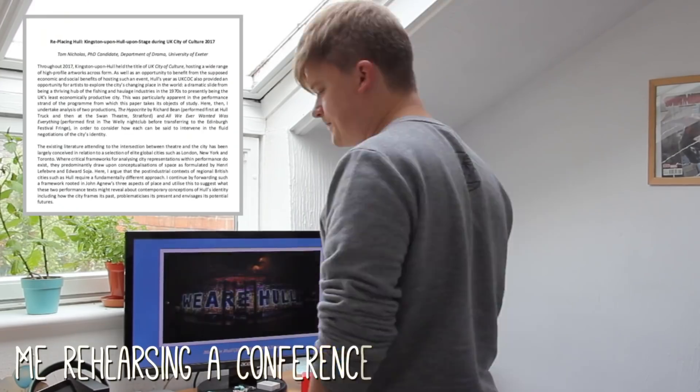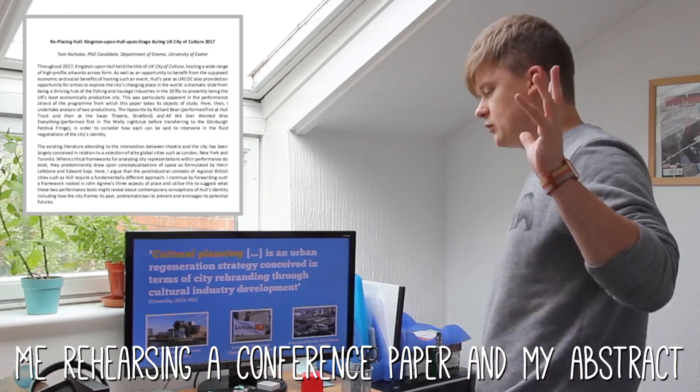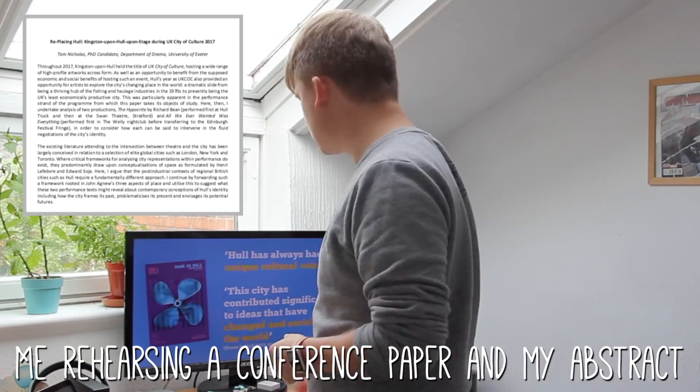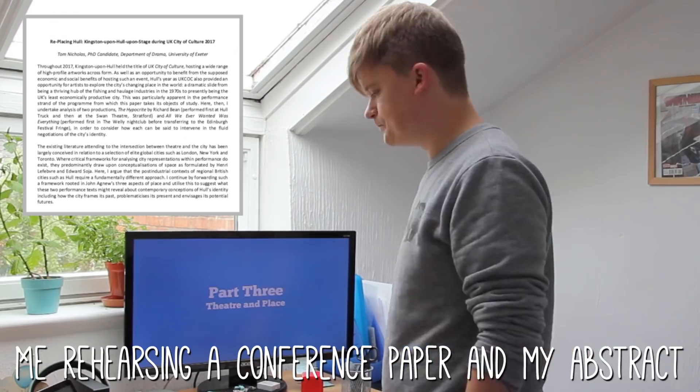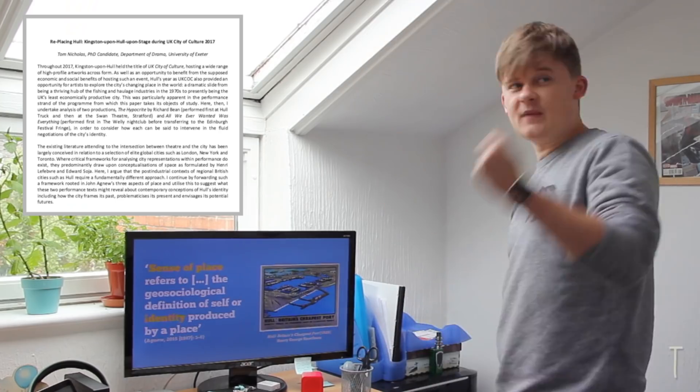Within academia there are kind of two main functions of an abstract. For academic conferences, abstracts are used as part of an application process. You send an abstract to a conference organiser and they use that as a way of deciding whether your research fits in with that conference and whether to invite you or not. And if they do decide to invite you, they'll use that abstract to decide where to place you within the conference programme. In terms of journals, sometimes abstracts are used in a similar way — often around themed issues where editors are inviting submissions around a particular topic. However, for the most part journals will expect you to submit a full draft of your article on spec.